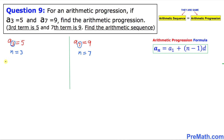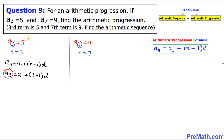Our formula is a sub n equals a sub 1 plus (n minus 1) times d. For the first part, a sub n is a sub 3, so we fill in: a sub 3 equals a sub 1 plus (3 minus 1) times d. Since a sub 3 is 5, this becomes 5 equals a sub 1 plus 2d. We'll call this Equation 1.